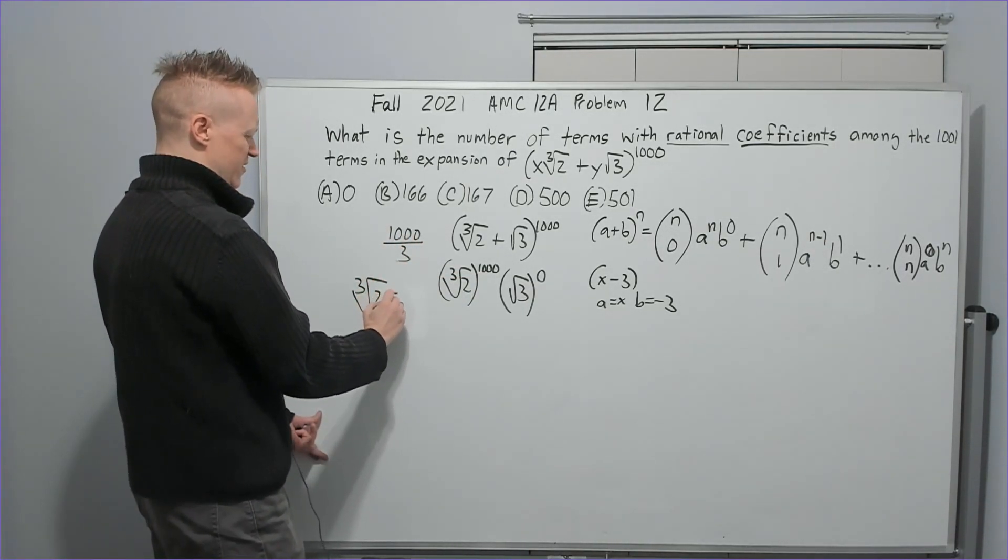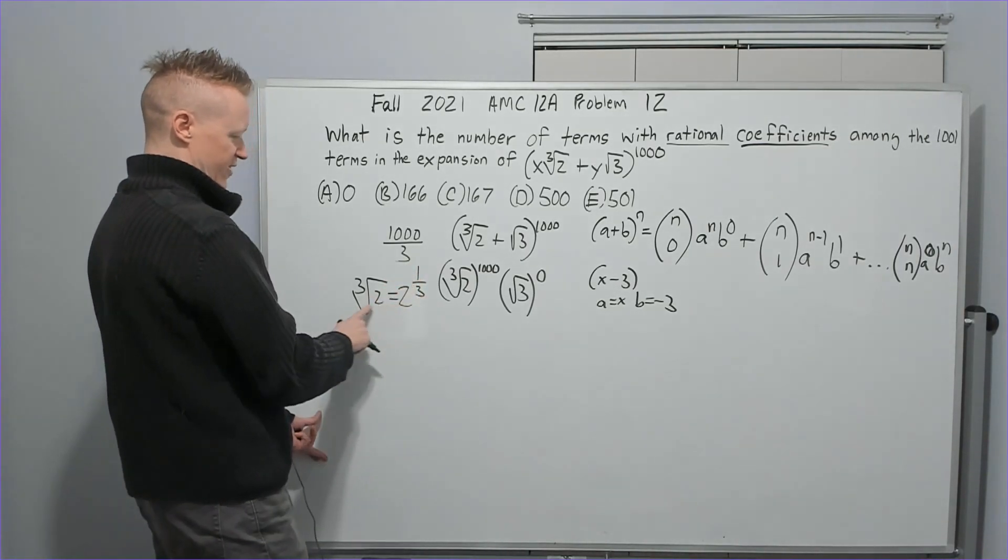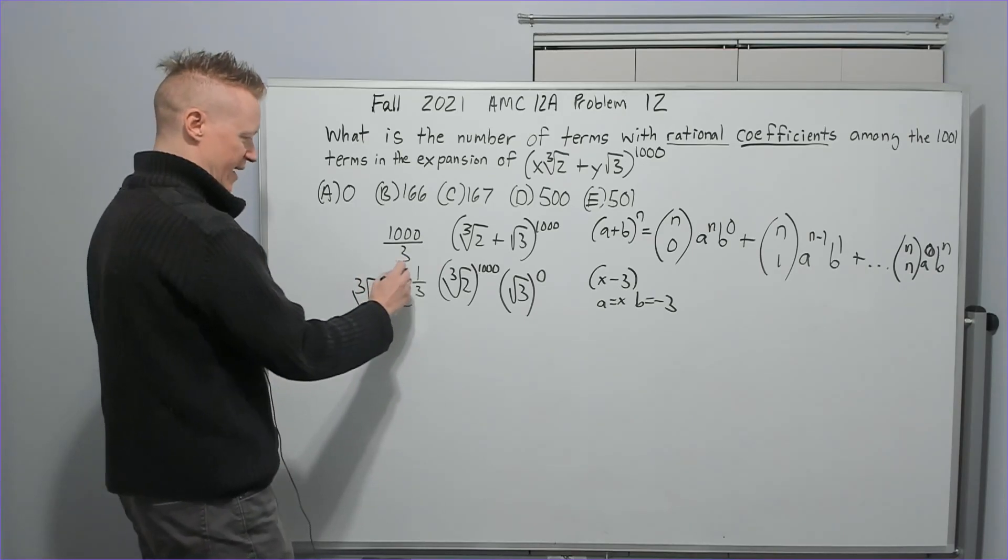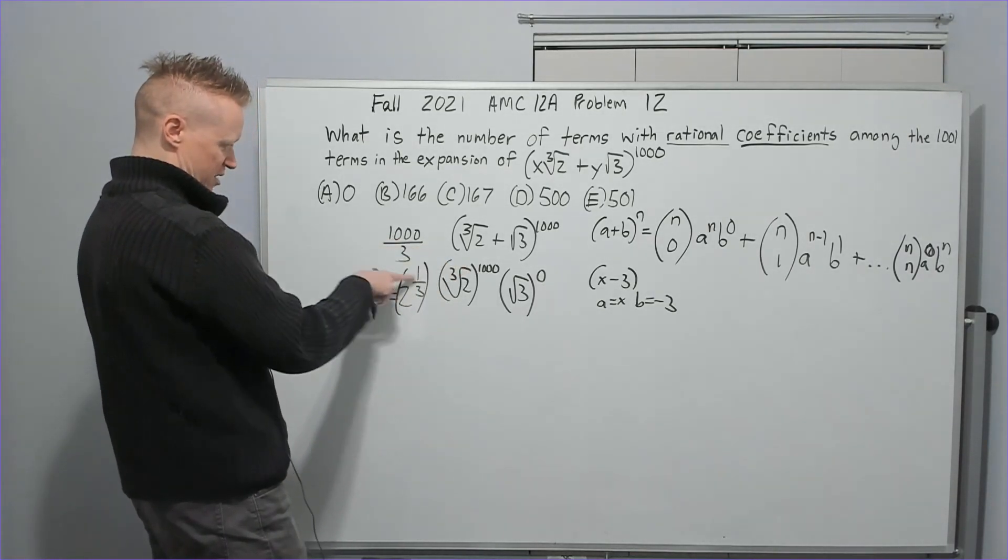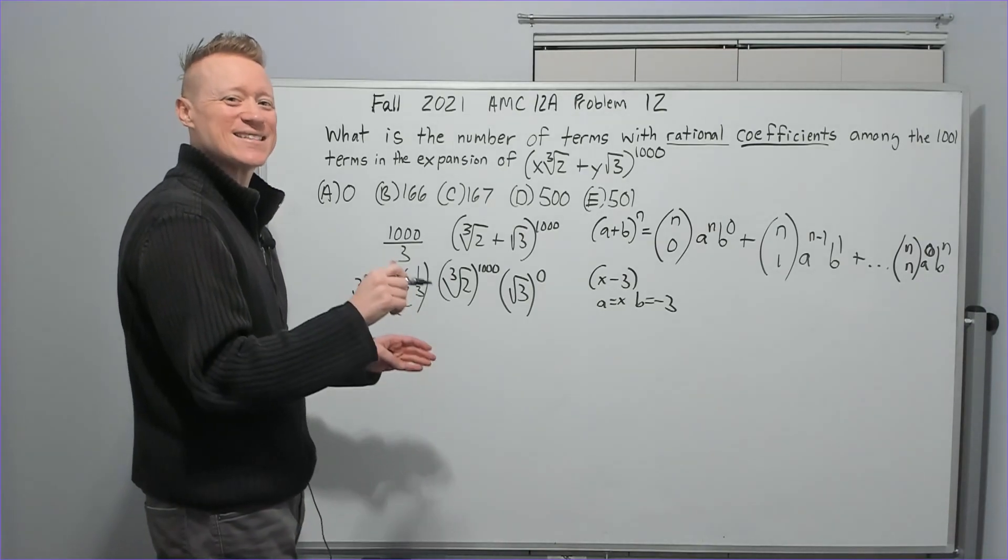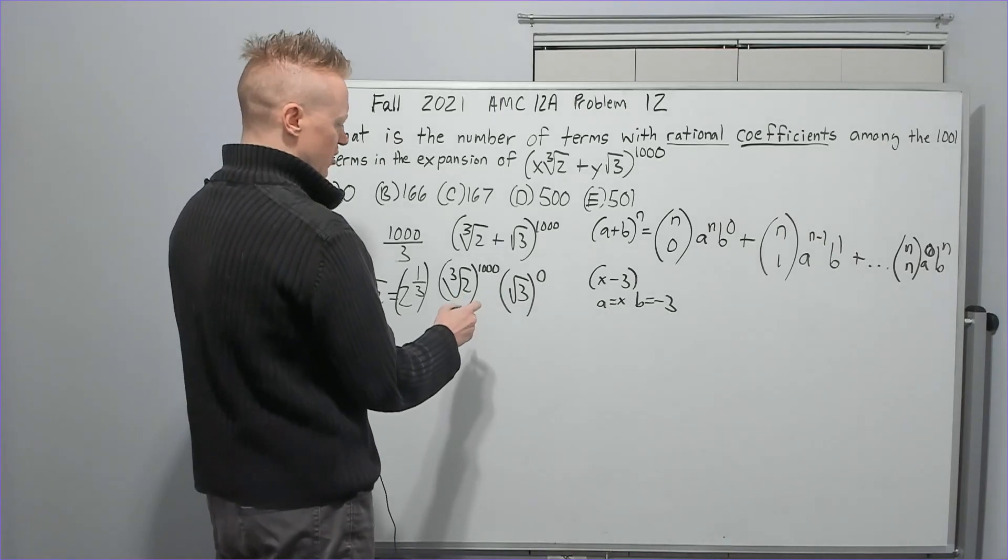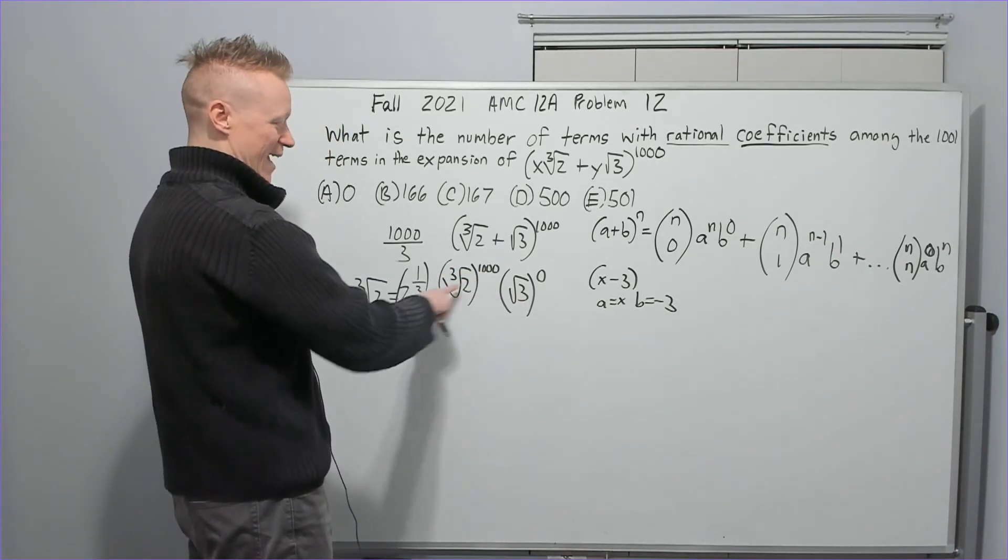We only have to consider what happens to the powers of these two terms. So the very first term would have cube root of 2 to the 1000 and root 3 to the 0. Okay, but in order for this to be rational, I'm going to need to have it be that that number is divisible by 3. Again, all I'm using, you guys, if you're taking AMC 12, you really should know these kinds of ideas. It's 1 third power. And then I can take that to the 1000th power, and I get this. But 3 doesn't go into there.